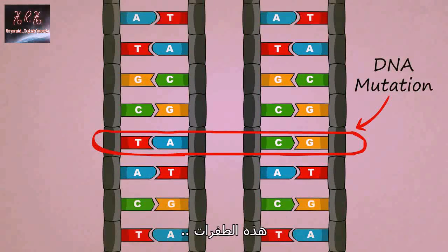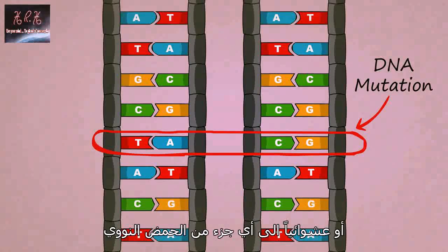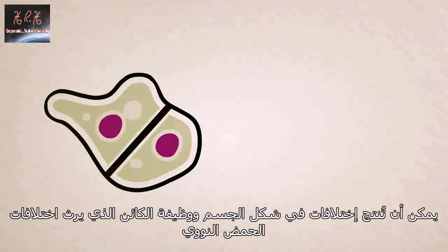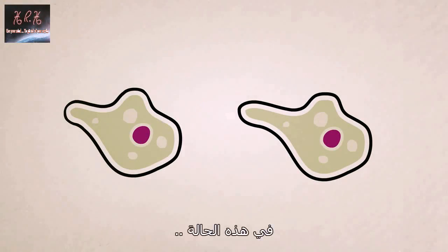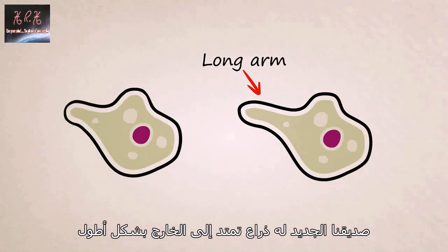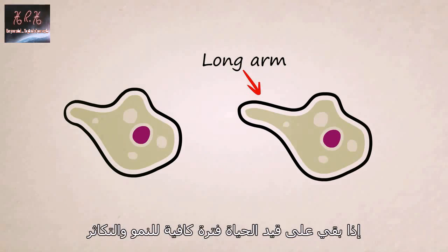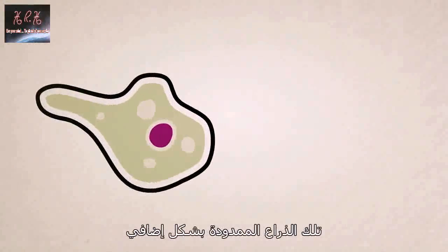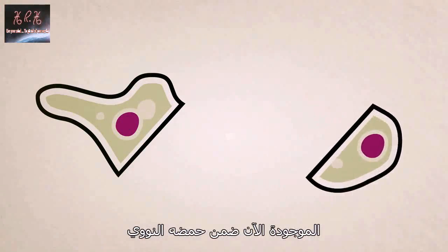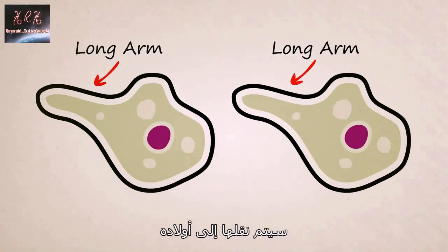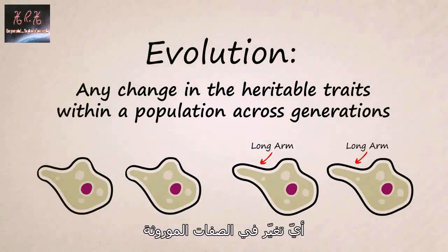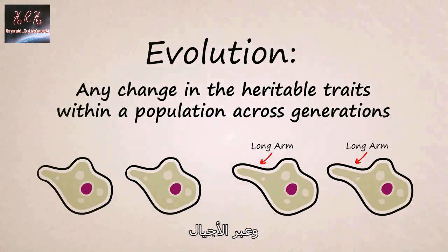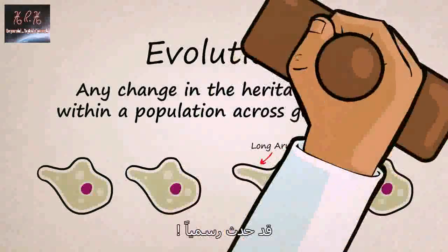These mutations, which happen completely on accident and randomly to any part of a DNA strand, can produce variation in the body shape and function of the creature who inherits the modified DNA. In this case, our new little friend has an arm that stretches extra long. If he survives long enough to grow and reproduce, that extra stretchy arm — which is now coded for in his DNA — will be passed on to his children. Evolution: any change in the heritable traits within a population across generations has officially occurred.